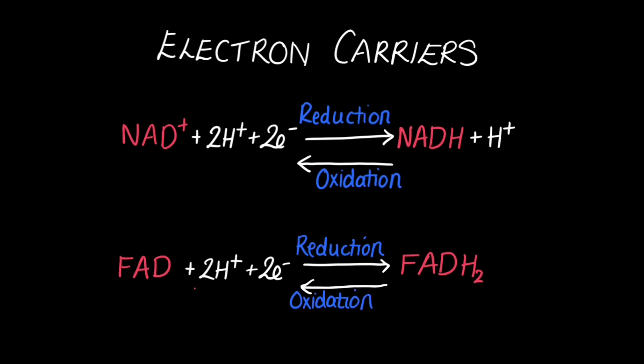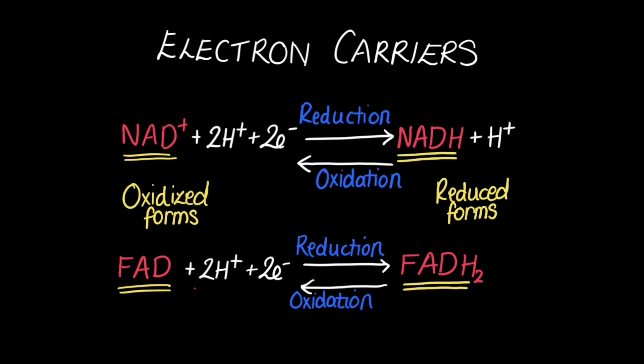When you're explaining the process of respiration and referring to the electron carriers, you may refer to the oxidized forms, which is NAD+ and FAD, or you might refer to the reduced forms, which would be NADH or FADH2.